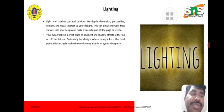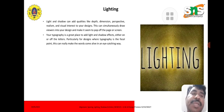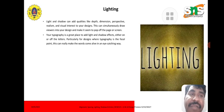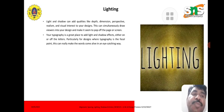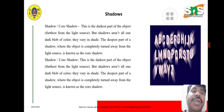Lighting — light and shadow can add qualities like depth, dimension, perspective, realism, and visual attraction to your design. This can draw viewers into your design and make it seem to pop off the page or screen. Your typography is a great place to add light and shadow effects, either on or around the letters, particularly for designs where typography is the focal point — this can really make the word come alive in an eye-catching way.